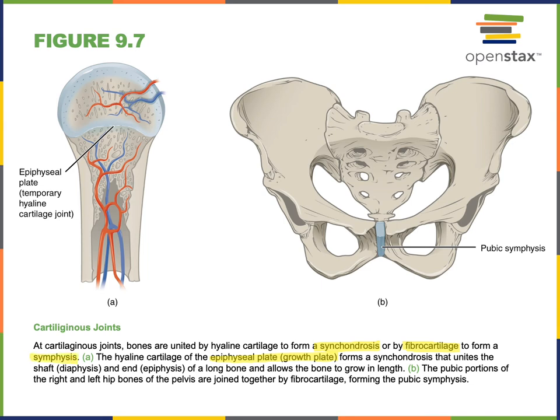A symphysis is a cartilaginous amphiarthrosis — a cartilaginous joint with a slight amount of motion, typically joined by fibrocartilage. The pubic symphysis, the articulation between the right and left pubic bones, allows slight motion but is not freely mobile like a diarthrosis. Similarly, the intervertebral disc is another cartilaginous amphiarthrosis where two bones are stabilized by fibrocartilage.